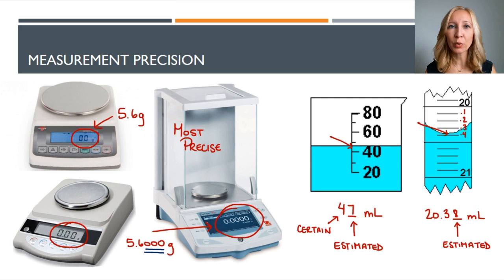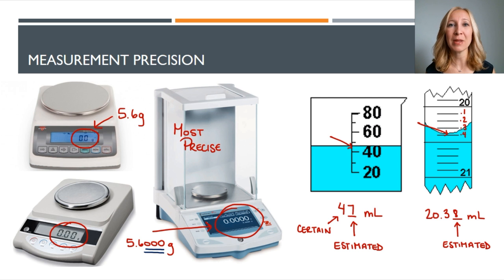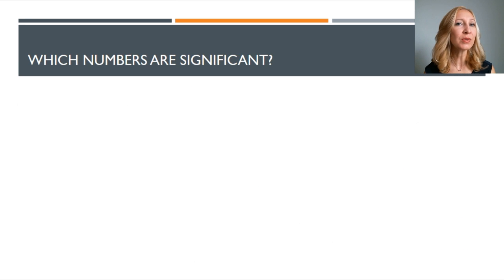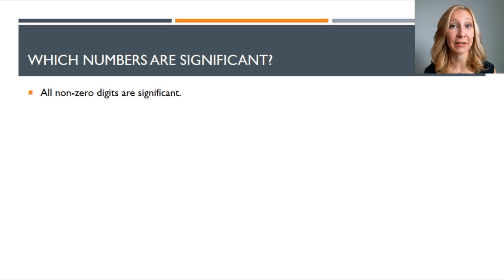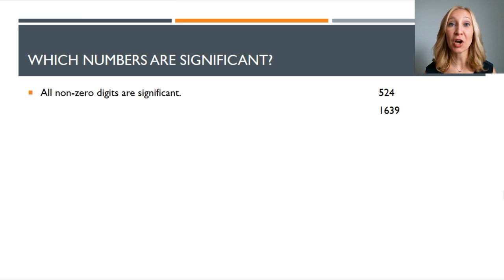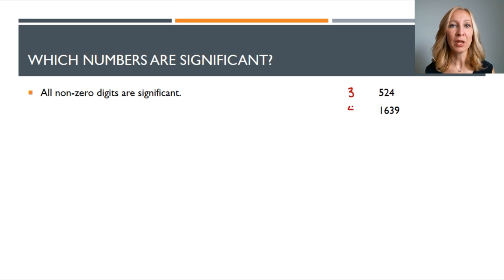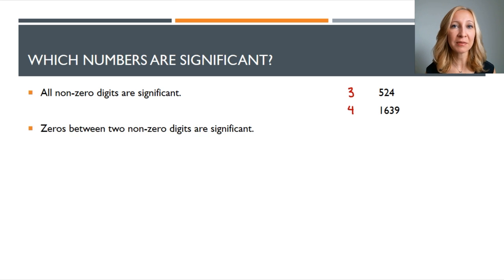So if we're just looking at a number, how do we tell which numbers are significant and which are not? There's a series of rules, but just remember they all go back to making and representing measurements. Rule number one — this is an easy one: all non-zero digits are significant. So 524 or 1,639 — all of these digits are significant. 524 has three significant digits, and 1,639 has four significant digits.